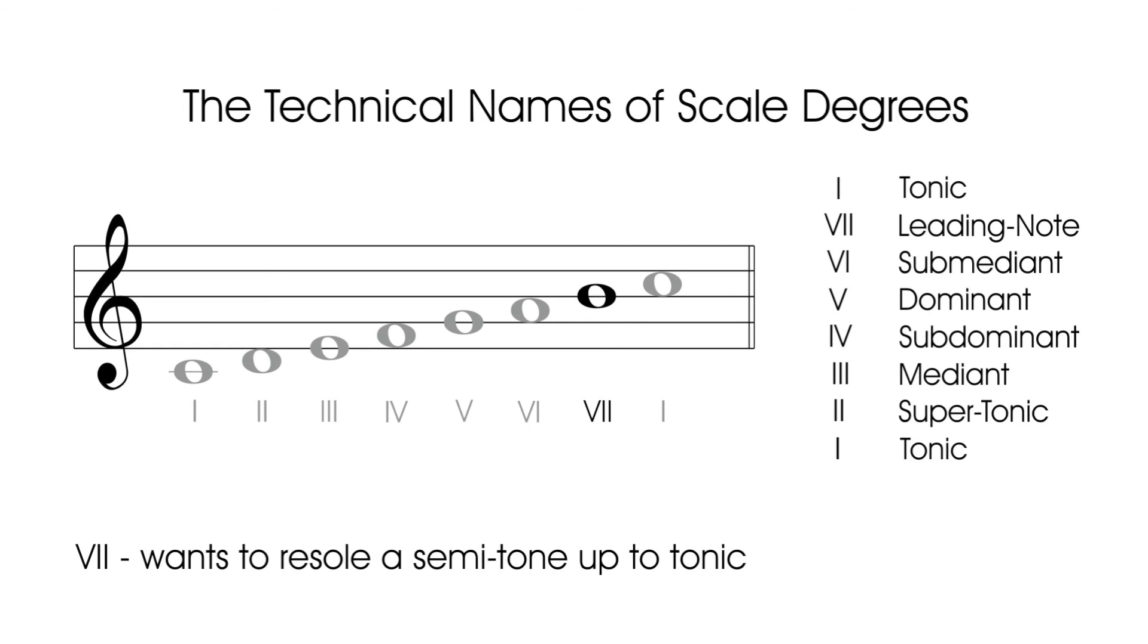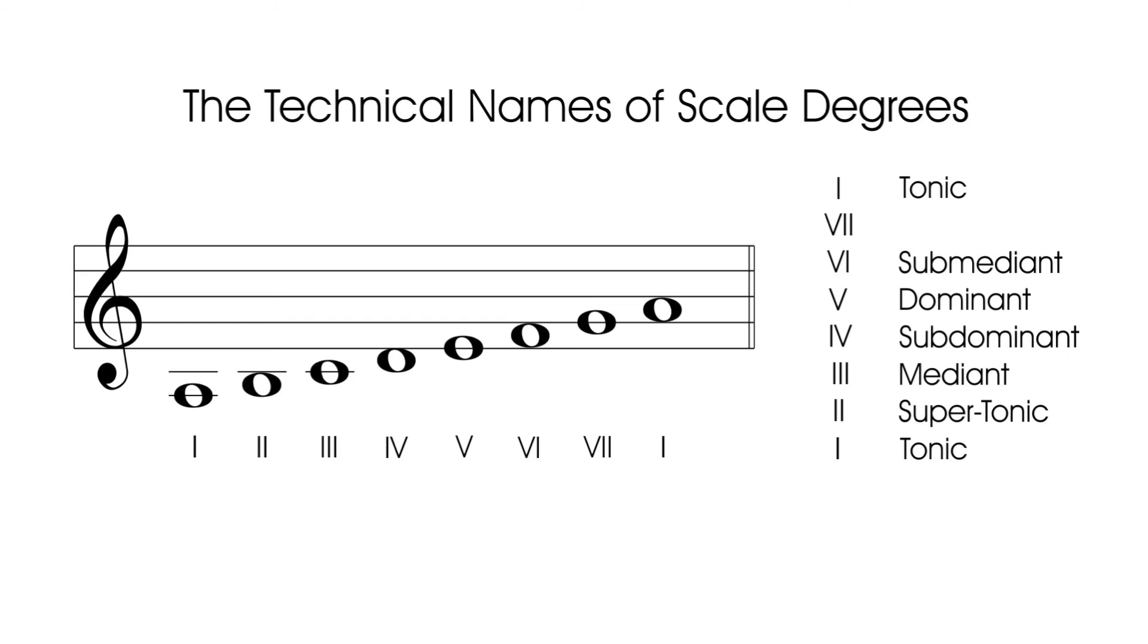The only exception to these degree names is found in the relative minor scale. Because of the natural minor's different intervallic structure, the seventh degree has a wider whole-toned interval. This creates a less demanding need to resolve to the tonic, and therefore warrants a different name. The obvious choice that perfectly identifies this note is sub-tonic.